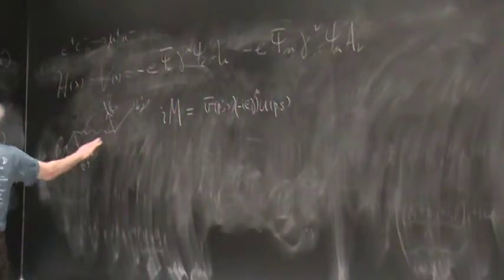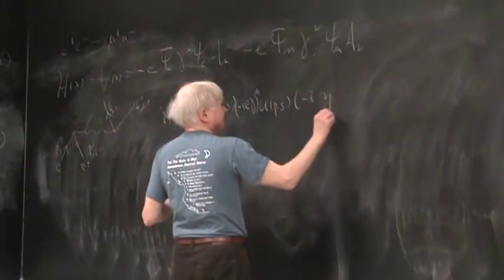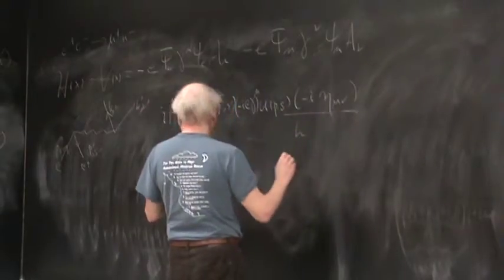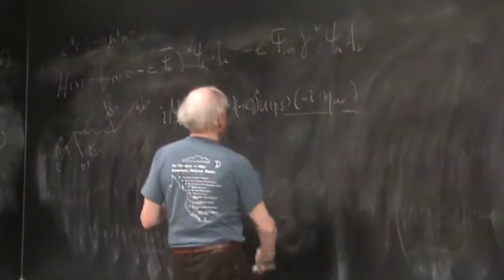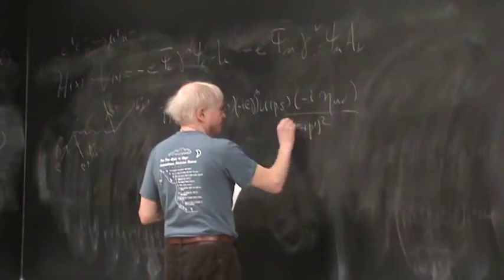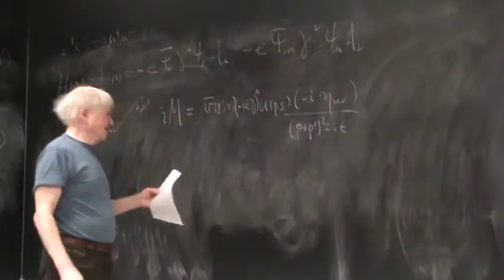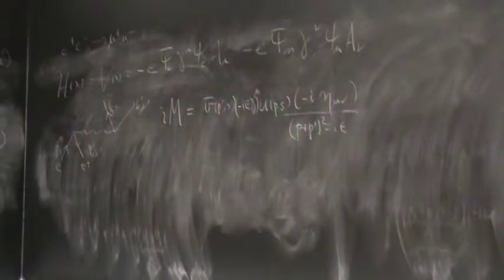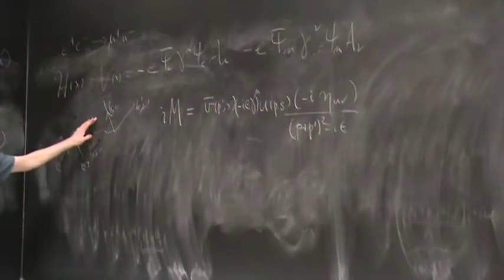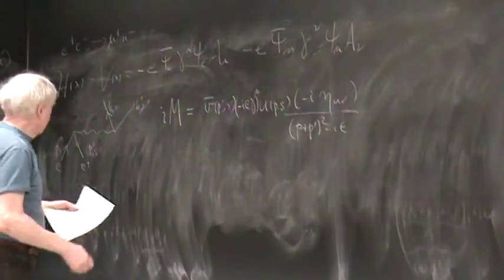Then we have a vertex, so we put in minus i e γ_μ. And then we have an incoming positron, and that gives us v̄(p', s'). So we've done this part. Now we've got a photon propagator.